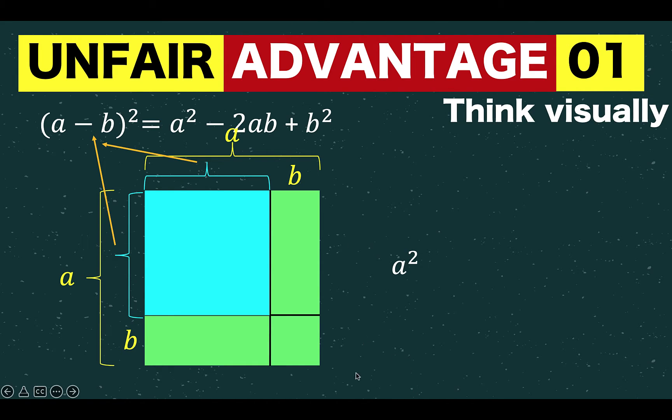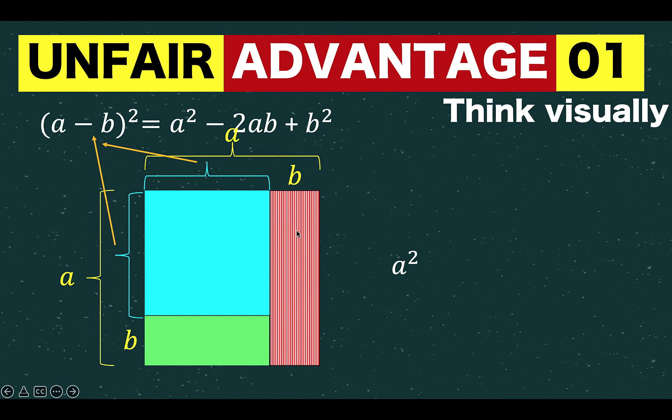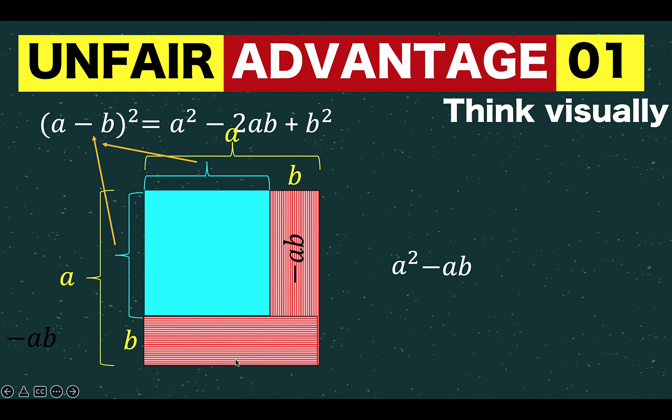The square of a minus b, that means the area of this blue square, can be computed this way. You start with the green square with an area of a squared. But we are going to deduct the area of this rectangle, which is minus ab. And the area also of this other rectangle at the bottom, which is again negative ab.